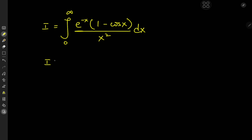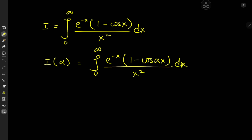We'll define the integral function I as a function of some parameter alpha, and we'll define it as the integral from 0 to infinity of e to the negative x times 1 minus cosine alpha x divided by x squared dx. So we're introducing the alpha parameter as an argument of the cosine function, and you can get another solution by introducing it as an argument in the exponential function — that would work perfectly well too. This structure gives us some useful information about the integral function. First up, we know that the target integral I is the integral function evaluated at alpha equal to 1.